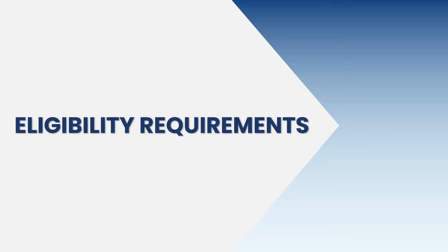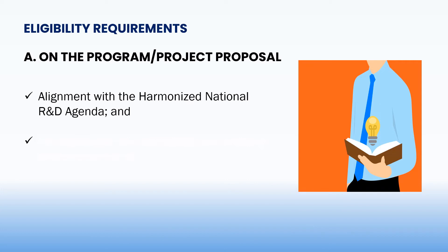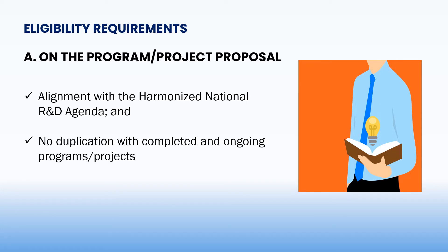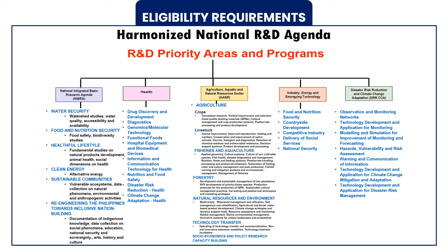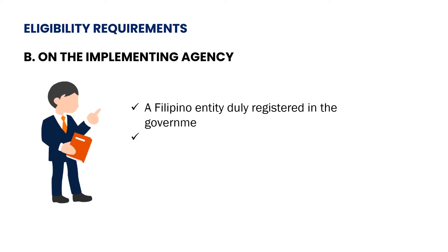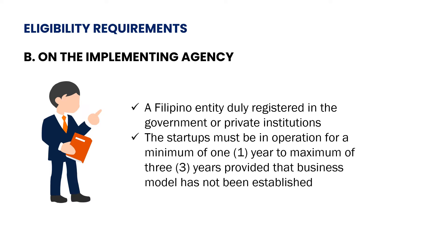A program or project proposal should be aligned to the harmonized national R&D agenda and should not have any duplication to ongoing or completed programs or projects. The implementing agency must be a Filipino entity duly registered with the appropriate government agencies — either a government agency or its instrumentalities, educational institution, NGO, nonprofit institution, private company, start-ups, or a DOST-certified science foundation. In the case of start-ups, they must be in operation for a minimum of one year to a maximum of three years, provided that the business model has not been established.